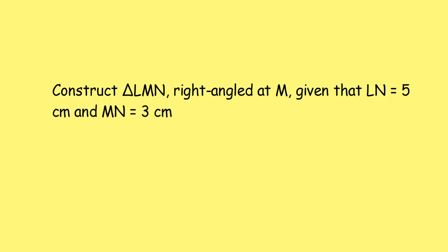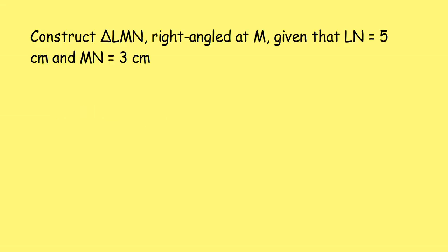Now, let us look at a question. Construct triangle LMN, right angled at M, given that LN is equal to 5 cm and MN is equal to 3 cm. Since it is right angled at M, we can start with MN equal to 3 cm. Before that, let us draw a rough sketch of the triangle. Here is triangle LMN, MN is equal to 3 cm and LN is equal to 5 cm.